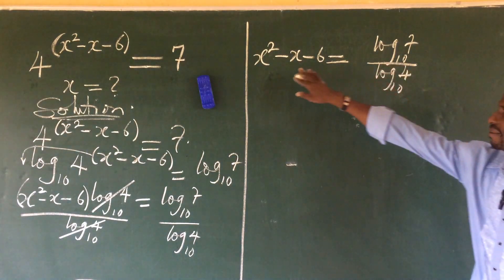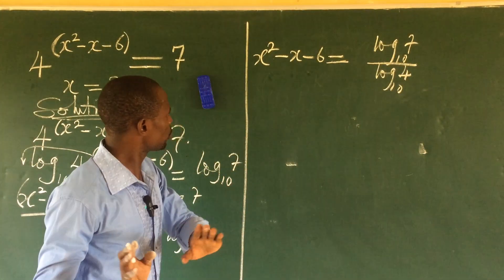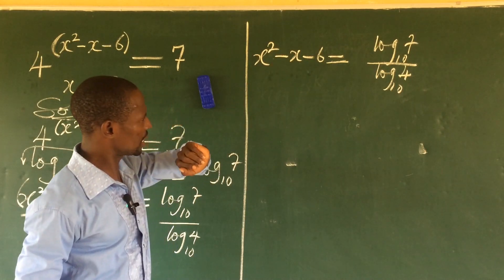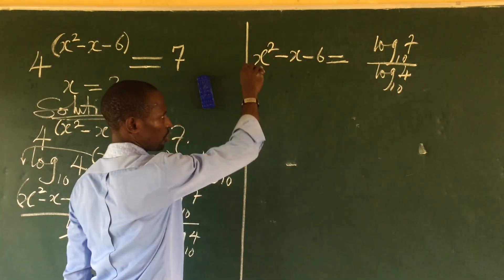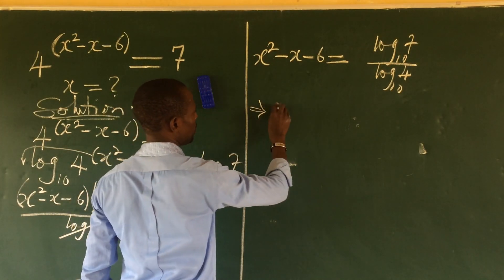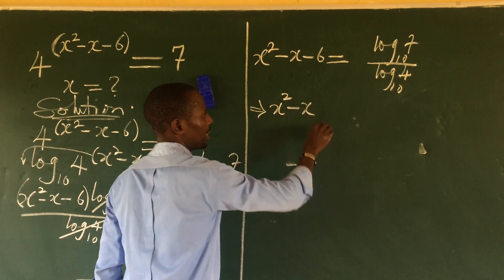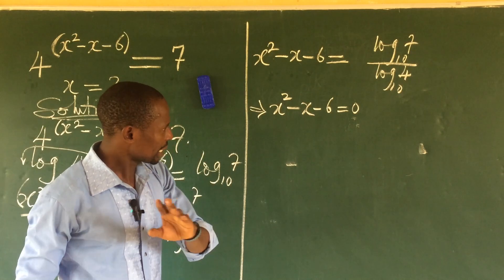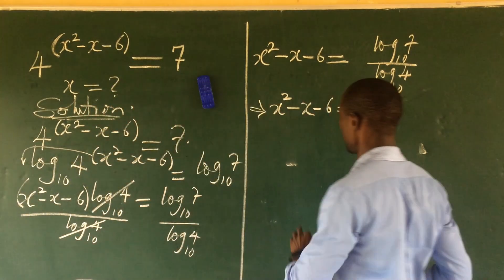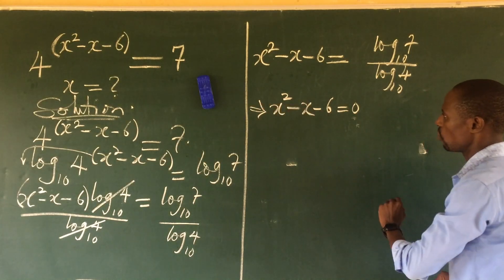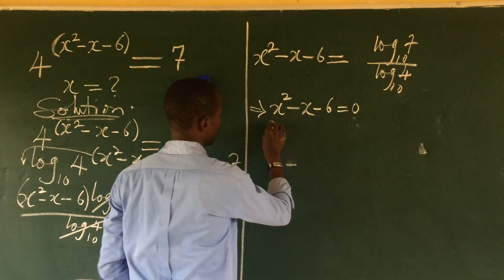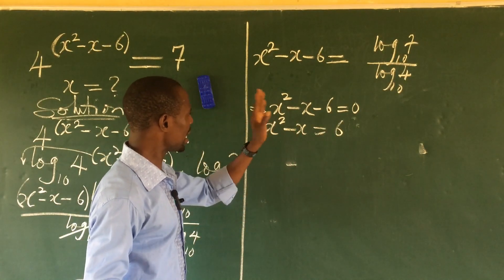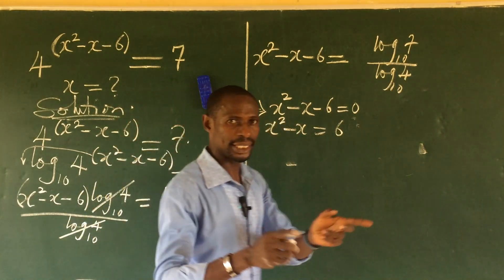To solve the quadratic, we'll factorize and use the completing-the-square method. We take x² − x − 6 = 0 on its own. Since the coefficient of x² is unity, we move the constant to the right: x² − x = 6. Then we add the square of half the coefficient of x to both sides.